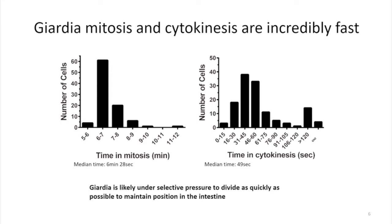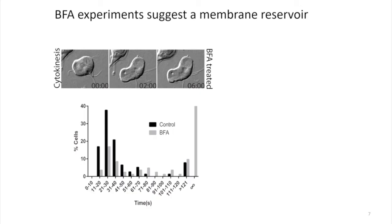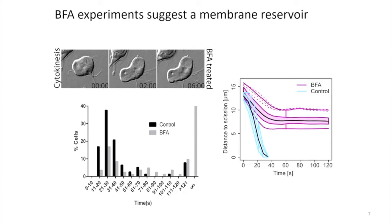We think the reason these cells divide so quickly is that they have to take apart their ventral disc when they divide, which means they have to let go of the host intestine. If they detach, they can get swept out. So there's been selective pressure to divide as quickly as possible and reattach. One thing we wondered is where does the membrane come from to support this division? In normal round cells there's something like a 20% increase in surface area. We saw that treating cells with Felden A would inhibit cytokinesis, and if we quantify furrow progression, it regularly gets about halfway and then gets stuck, suggesting there is some membrane reservoir available until that point.